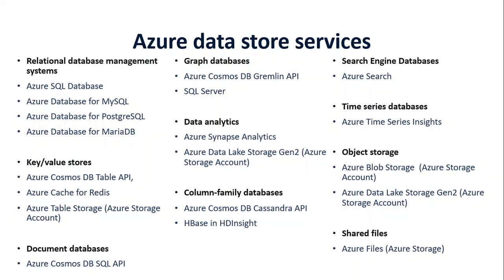The next data type is key-value store, which is basically a NoSQL kind of database. For that, there are three services: Azure Cosmos DB API, Azure Cache for Redis, and Azure Table Storage, which is also part of Azure Storage Account. Another NoSQL data type is document database, and for that, Azure Cosmos DB SQL API is sufficient. Azure Cosmos DB MongoDB API will also be good.